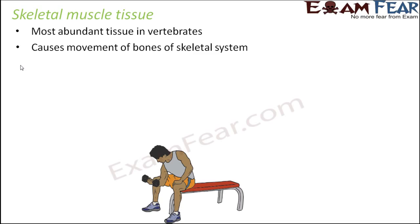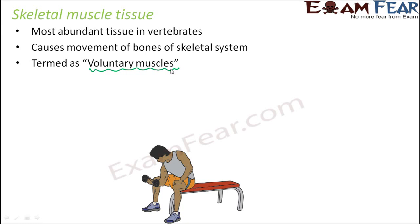If you want to move anything — your hands, your legs, your feet — everything is made of bones inside. So the bones need to be moved, and this movement of bones is controlled by the skeletal muscle tissue. They are also known as voluntary muscles because these movements of bones are controlled by our will. If I want to move my hand, I will move my hand. So these movements are voluntary, happening on my own will.